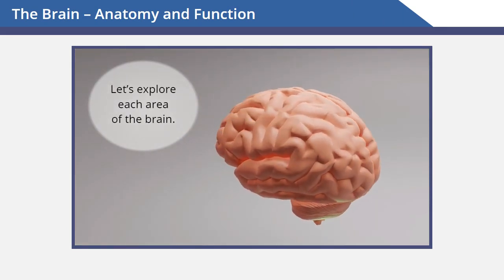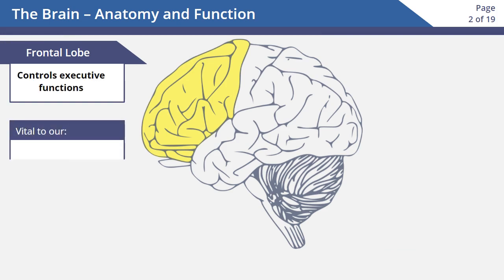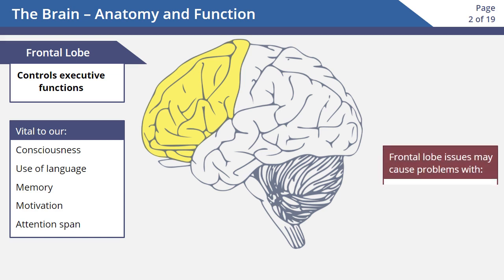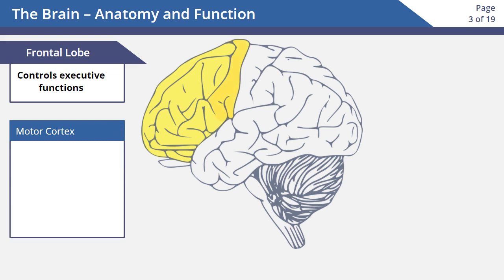The frontal lobe controls executive functions and is one of the sections that makes us human. It's vital to our consciousness, our use of language, our memory, our motivation, and our attention span. Someone who has problems with their frontal lobe may have problems with their short and long-term memory, depression, impulse control, and speech.